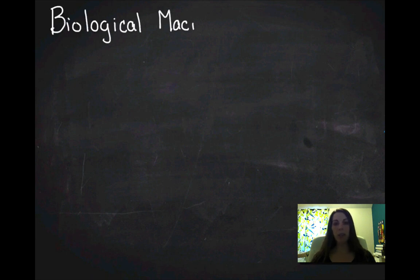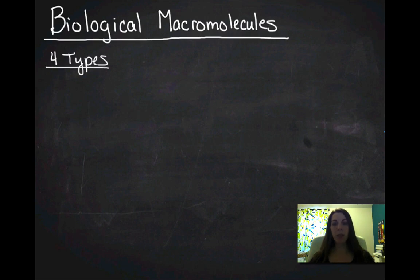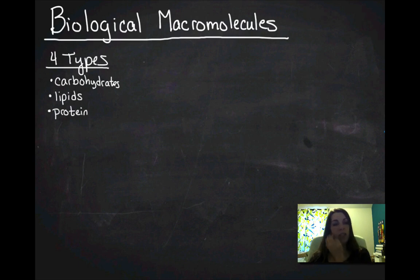So the first thing we need to talk about is what a biological macromolecule is and there are four types. So they are carbohydrates, lipids or fats, proteins, and nucleic acids.